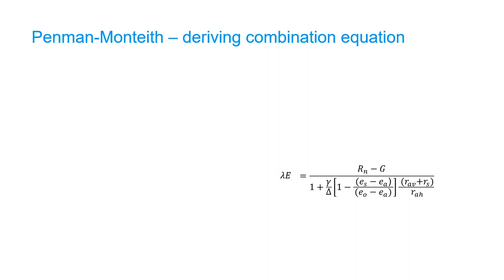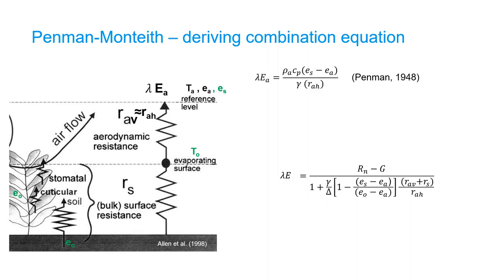The next step is to define a temporary term lambda E-a, which is the vapor transfer from evaporating surface to the air at reference level. The surface resistance is omitted since we only consider the difference between saturated vapor pressure at air temperature E-s and the actual vapor pressure of the air E-a, also known as vapor pressure deficit.